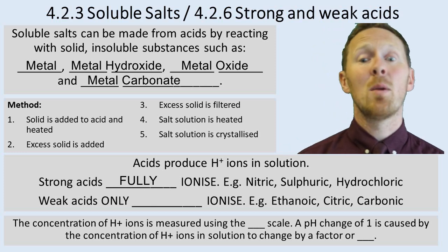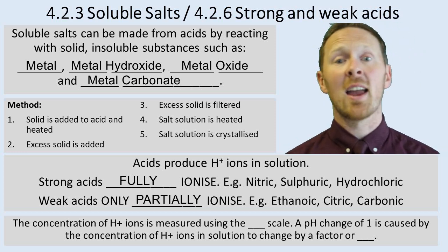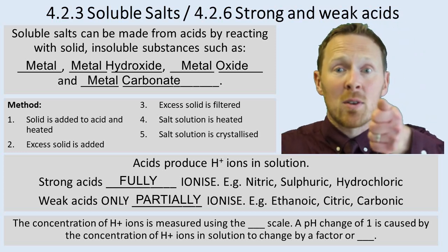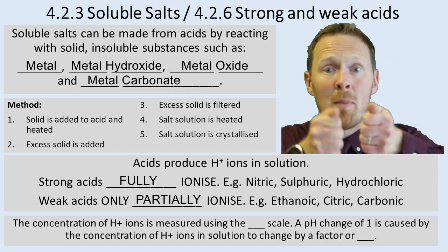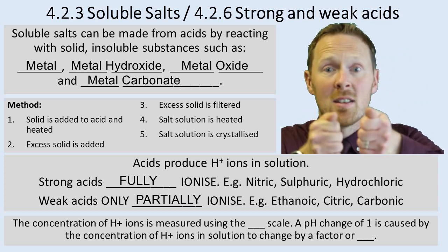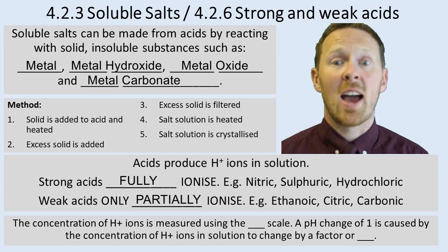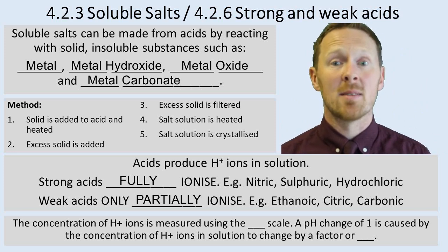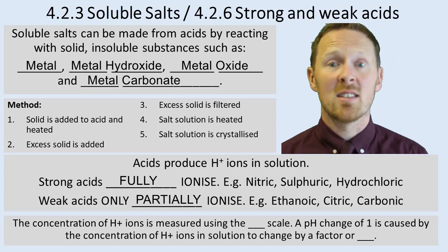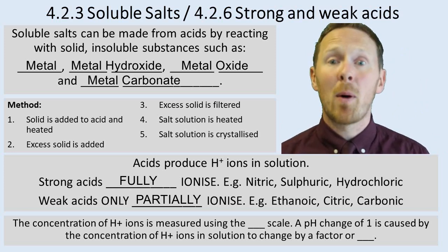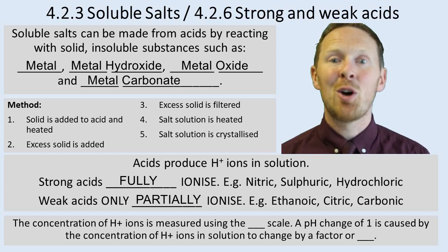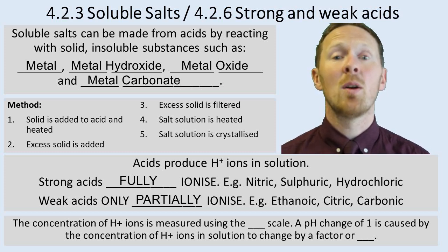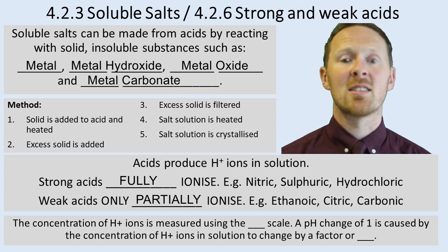Weak acids only partially ionize, meaning not all of the H+ ions separate from the non-metal part — the salt part of the acid. Examples include ethanoic acid, citric acid, and carbonic acid. Make sure you know about those acids and that they are weak acids because they only partially ionize.